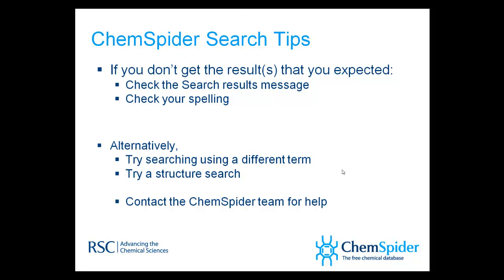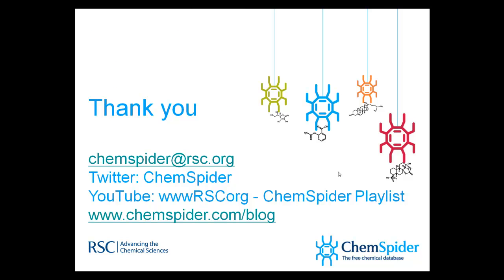If you still can't work out why you did not get the results that you expect, you should try searching using a different synonym. If you are still unable to obtain a useful result, you might want to try a structured search or contact the ChemSpider support team for more assistance. You can contact or follow ChemSpider using the following email address, chemspider.rsc.org, or using any of the following channels.